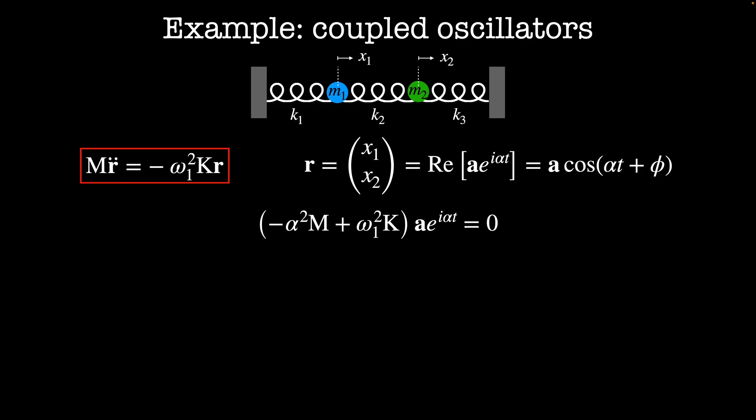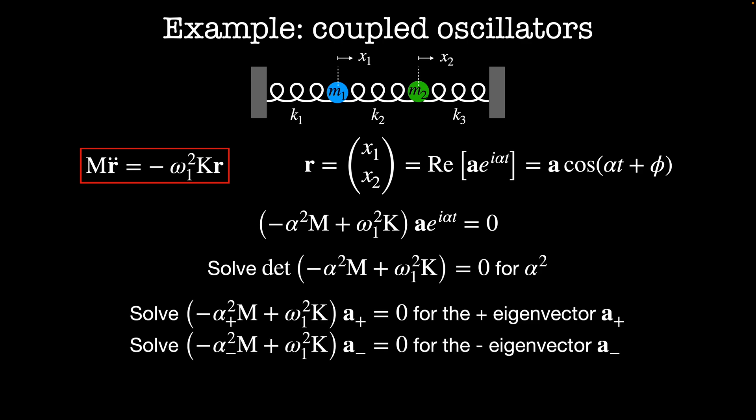So to diagonalize this matrix we want to solve the equation the determinant of minus alpha squared m plus omega 1 squared k equals 0. This equation is going to give us two solutions for alpha one positive and one negative and these are going to be the eigenvalues of our system. For each eigenvalue we have a corresponding eigenvector. For the positive eigenvector we're going to solve minus alpha plus squared m plus omega 1 squared k acting on the vector a plus is equal to zero where a plus is the positive eigenvector. And likewise we'll solve the equation minus alpha minus squared m plus omega 1 squared k acting on alpha minus is equal to zero for the negative eigenvector a minus.